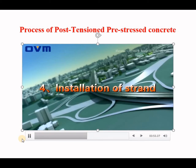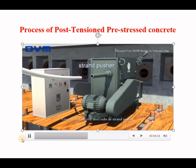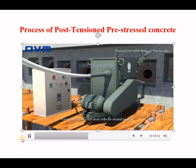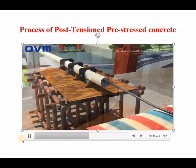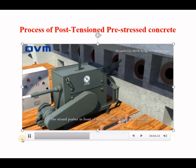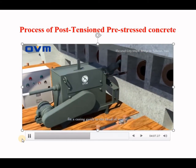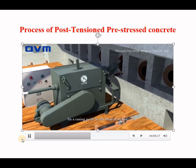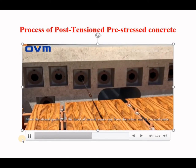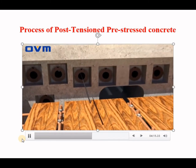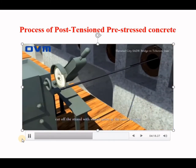For strand installation: connect the curved steel tube to the strand pusher, pull out the head of the strand from the coil, then run it in the duct. Put the strand pusher in front of the external cable to be installed, fix a casing guide to the head of the strand, then start the strand pusher until the head of the strand comes out from the other end of the external cable. Cut off the strand with a wheel cutter at the mark point.